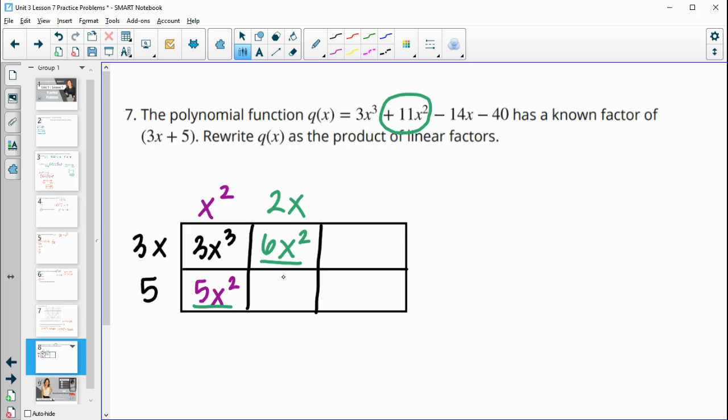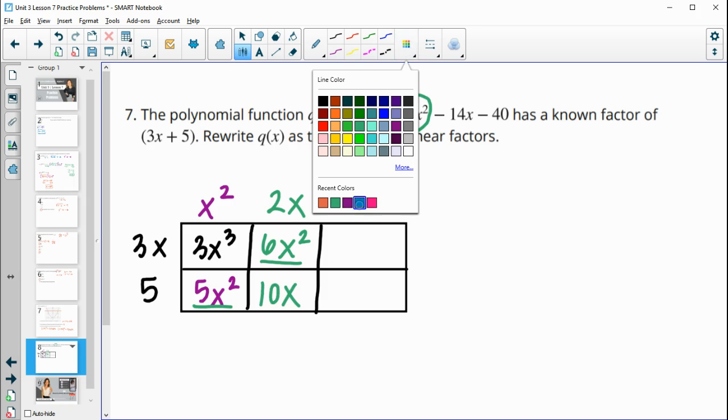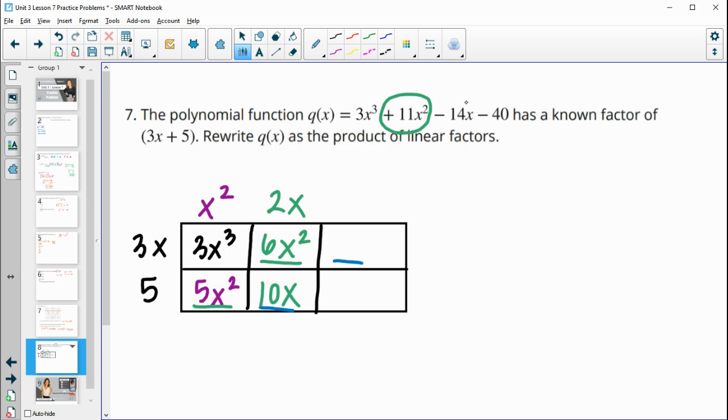And then 2x times 5 gives me 10x. So then 10x plus this box needs to equal my x term of negative 14x. So we're here at 10. We need to get all the way down here to negative 14, and this would be 0. So this would be down 10 to get to 0 and then down another 14. So this needs to be negative 24x. So 10x minus 24x gives me that negative 14x. So now we'll figure out 3x times negative 8 gives me negative 24x. And then negative 8 times 5 gives me negative 40, which matches here. So we did it correctly.